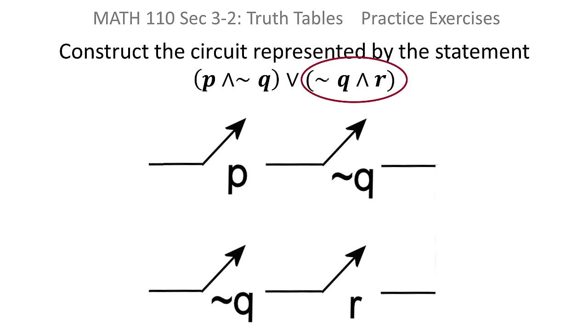The other one is also an AND, so it's a series circuit, and it's a NOT Q gate and an R gate, and they're ANDed together.